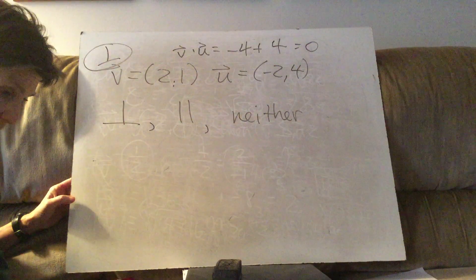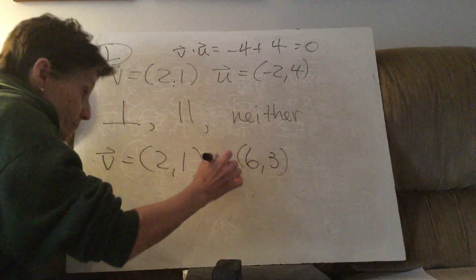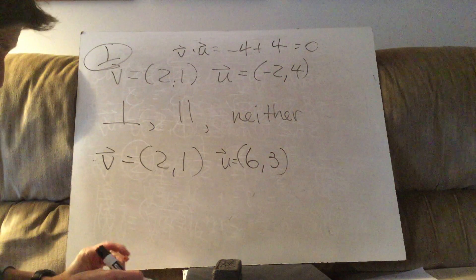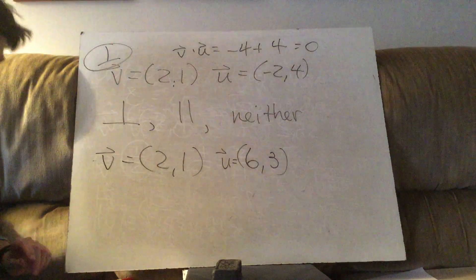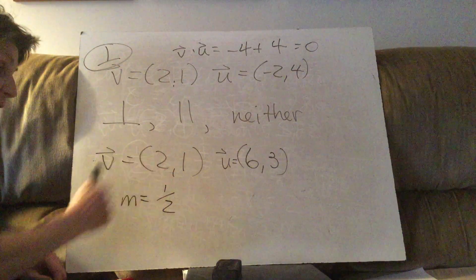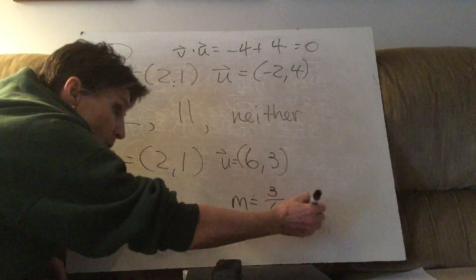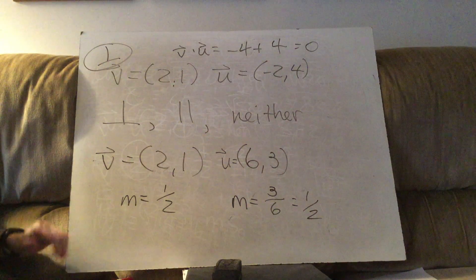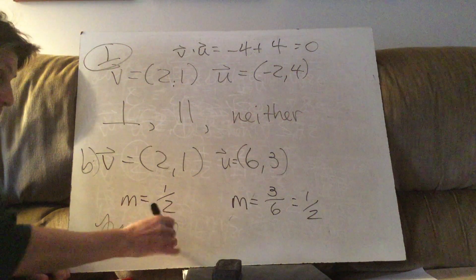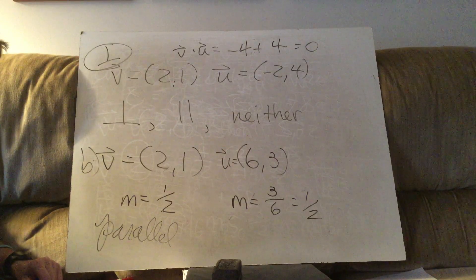Problem B: vectors are (2,1) and (6,3). Slope of the first is y over x = 1/2. Slope of the second is also 1/2. Since the slopes match exactly, the vectors are parallel. Parallel means you have exactly the same slope.